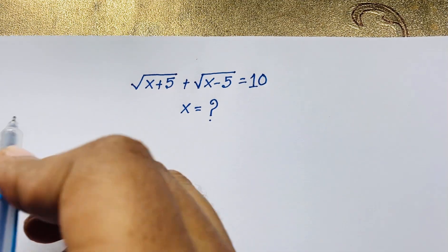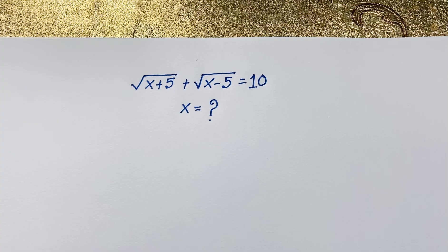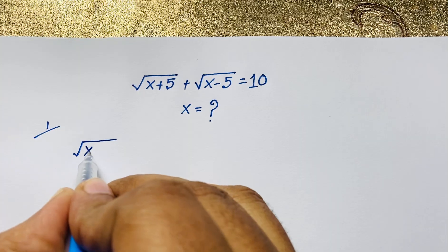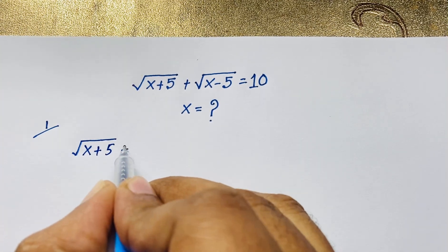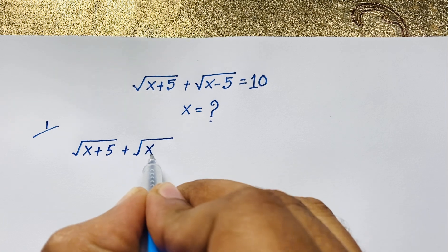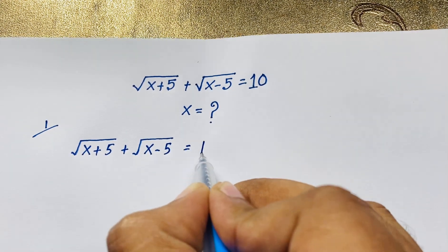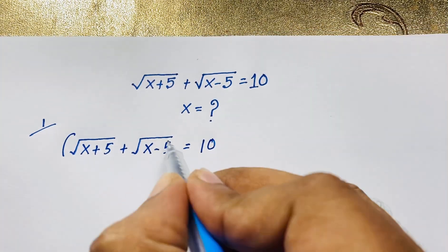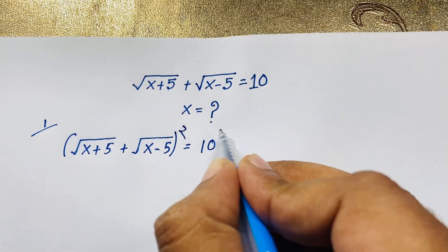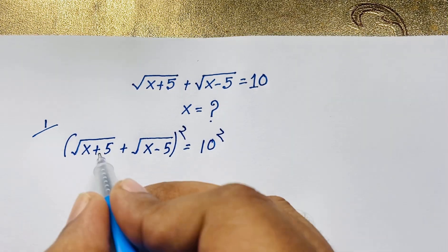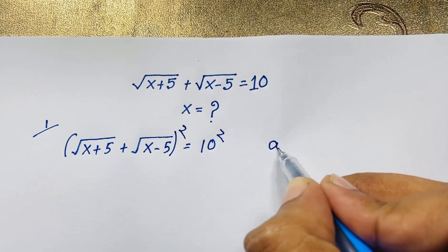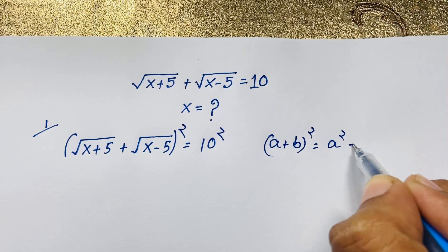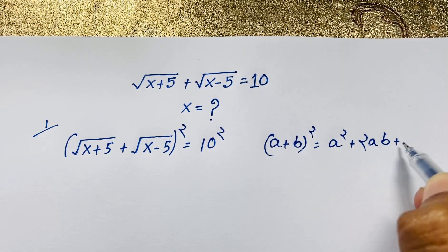I solve this question through a method. This is our first method. Our question is: square root of (x plus 5) plus square root of (x minus 5) is equal to 10. First of all, I use both sides whole square. At this moment you can see this is a and this is b. We know that (a plus b) to the power 2 is a squared plus 2ab plus b squared.